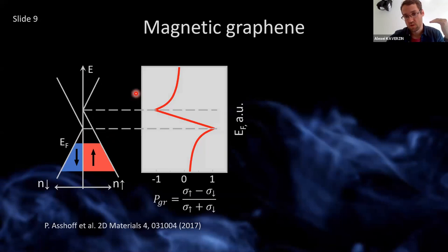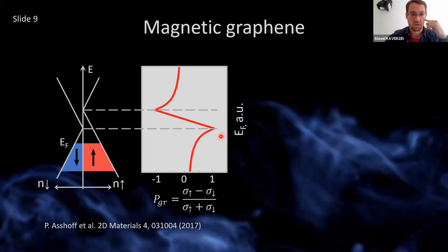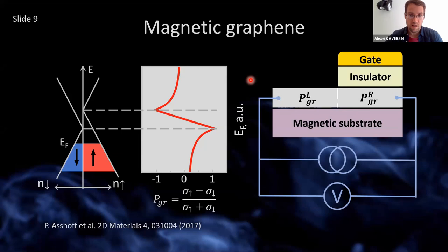Under some simple assumptions, it's possible to sketch how the graphene polarization — defined as the difference in conductivities for spin up and down divided by their sum — will depend on the Fermi level. It gets maximized around the point where the Fermi level crosses the semi-Dirac point, changes sign when it goes across, and decays at large energies. Once we understand that graphene polarization is largely dependent on the Fermi level, we can provisionally assemble the sample we would want.